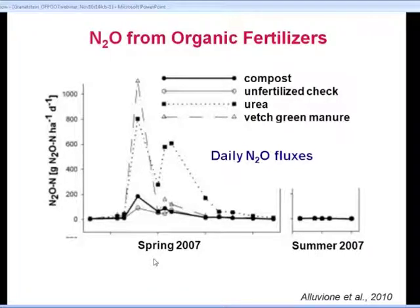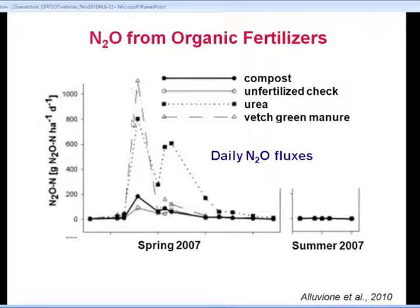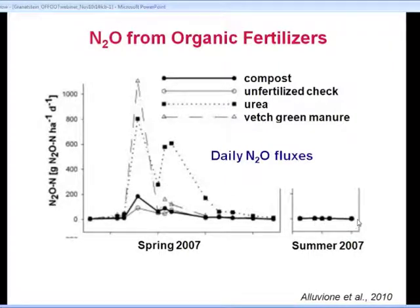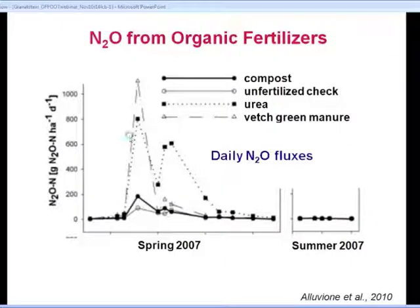One study from Italy looked at the impact of compost and green manure compared to urea fertilizer and an unfertilized check, measuring nitrous oxide emissions. When there's a big flush of nitrogen from green manure, it's not all that different from the fertilizer spike. Compost emissions were very low throughout the season. Moving from the wetter spring into the drier summer, nothing was emitting at all. This reemphasizes the importance of measuring fluxes at different times of year and around key management practices that influence the nitrogen regime. Green manures may have an N2O footprint that needs further examination.